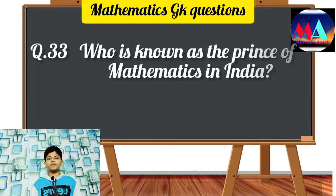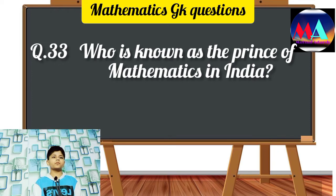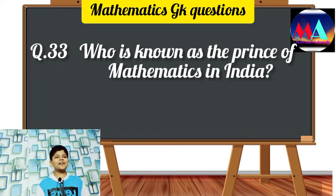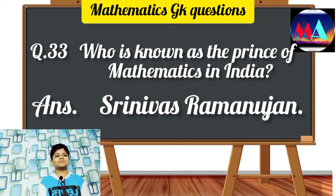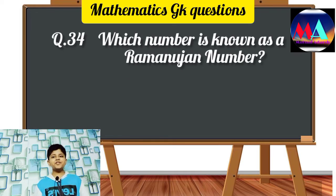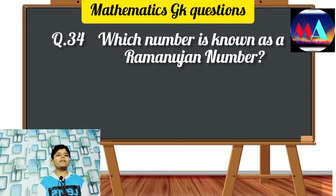Question number 33: Who is known as the Prince of Mathematics in India? Answer: Srinivas Ramanujan. Question number 34: Which number is known as the Ramanujan number? Answer: 1729.